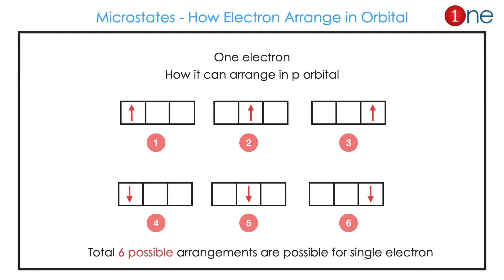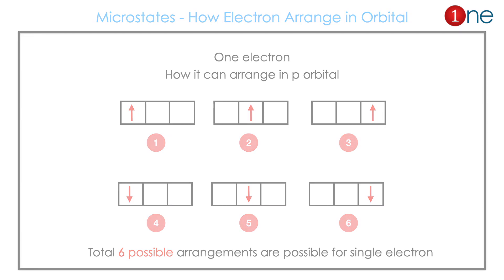First, let us see what a microstate is. Microstate means the arrangement of electrons in an orbital. For example, with one electron in a p orbital, you can arrange it in six possible ways. So microstate means the arrangement of electrons in an orbital.